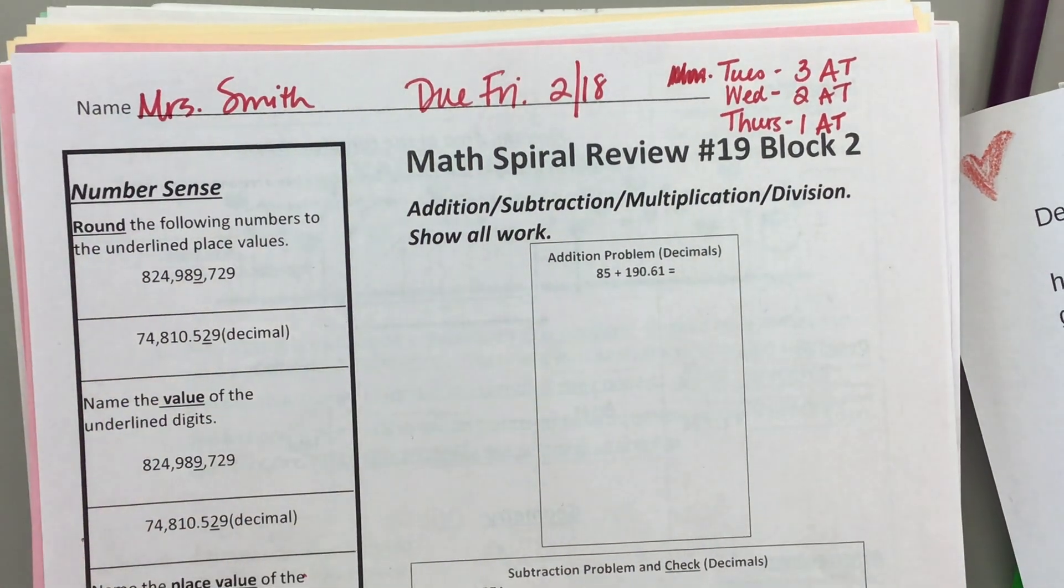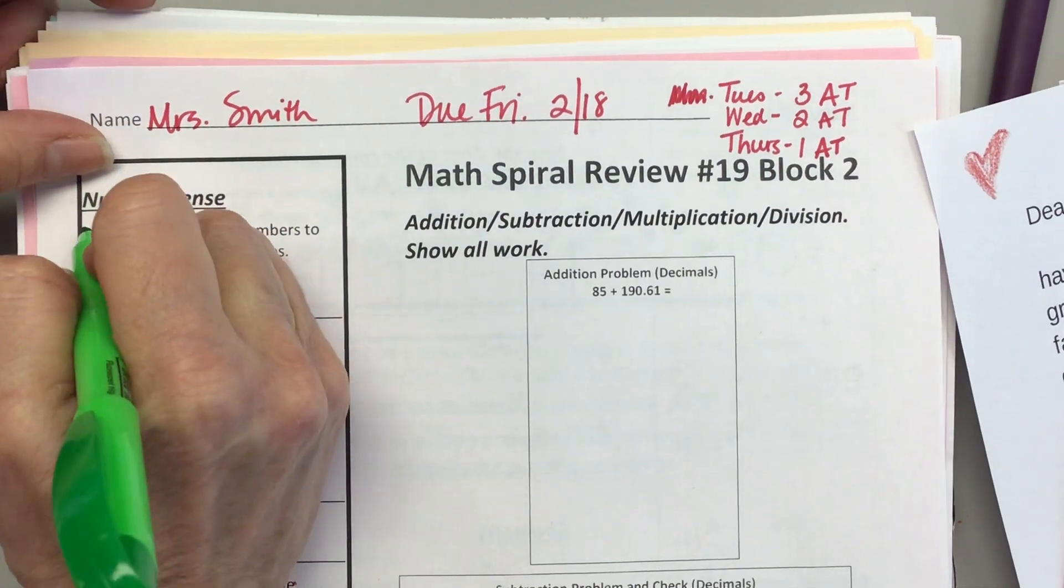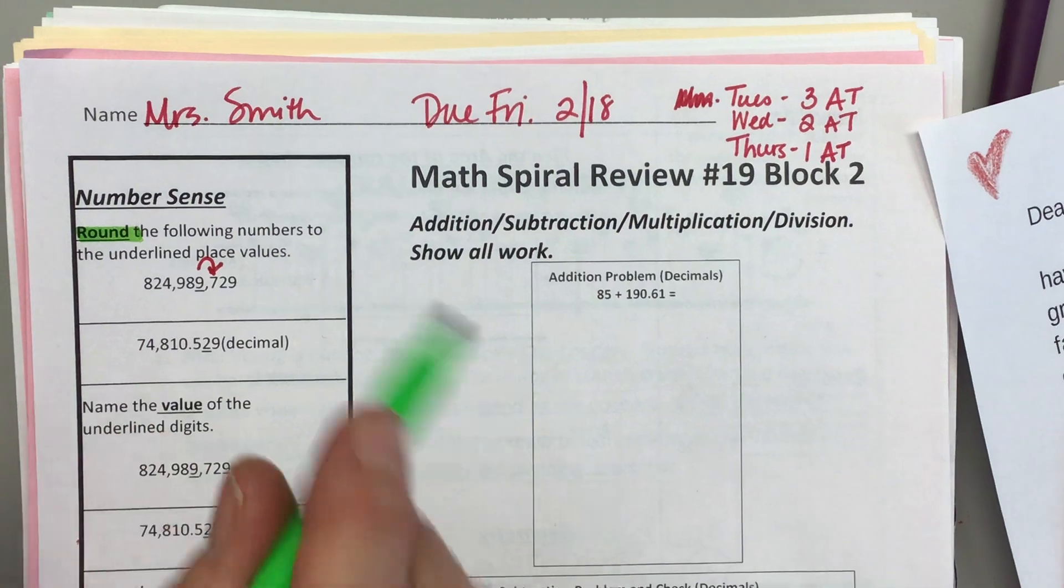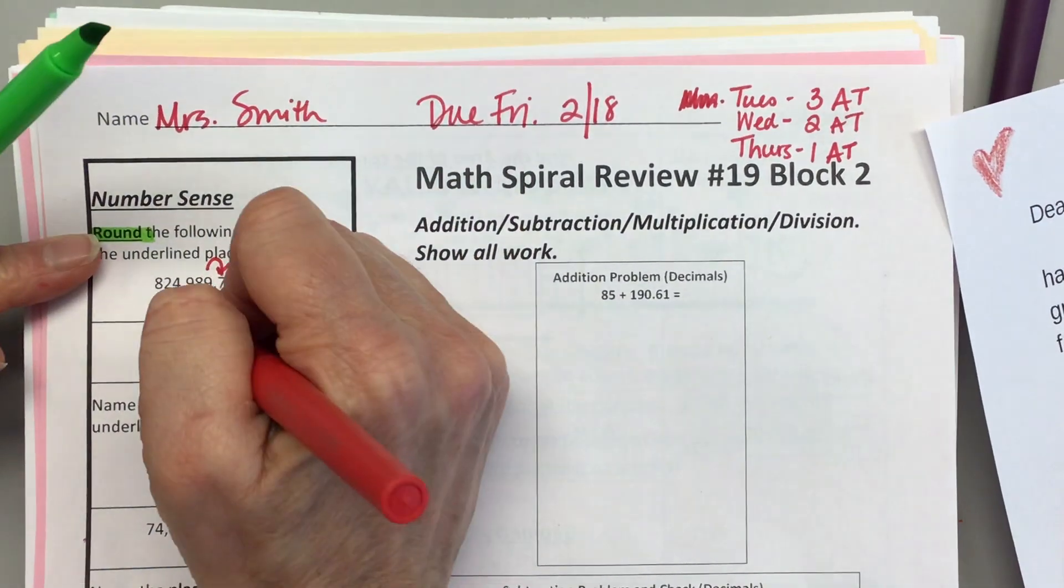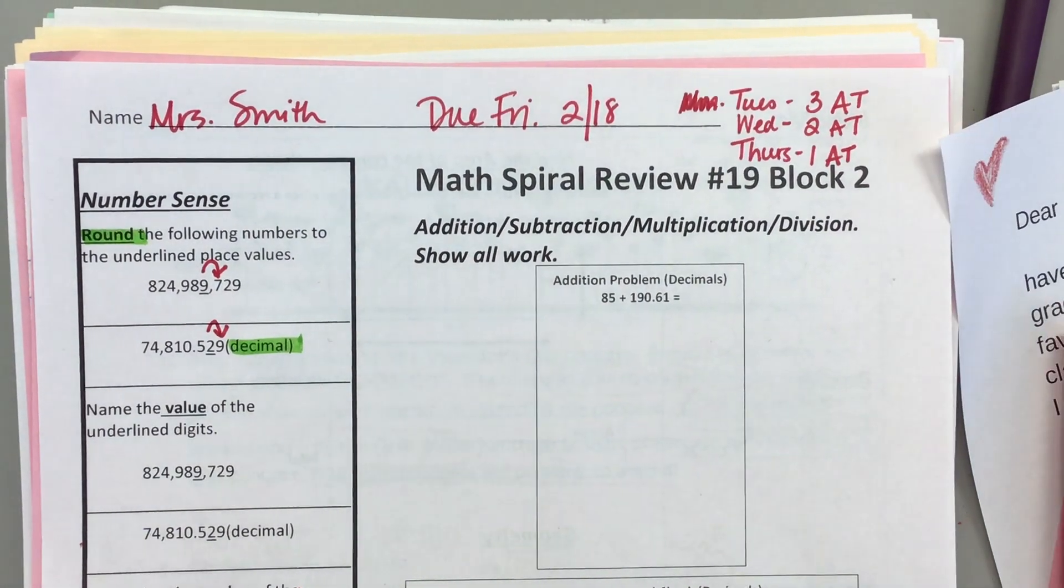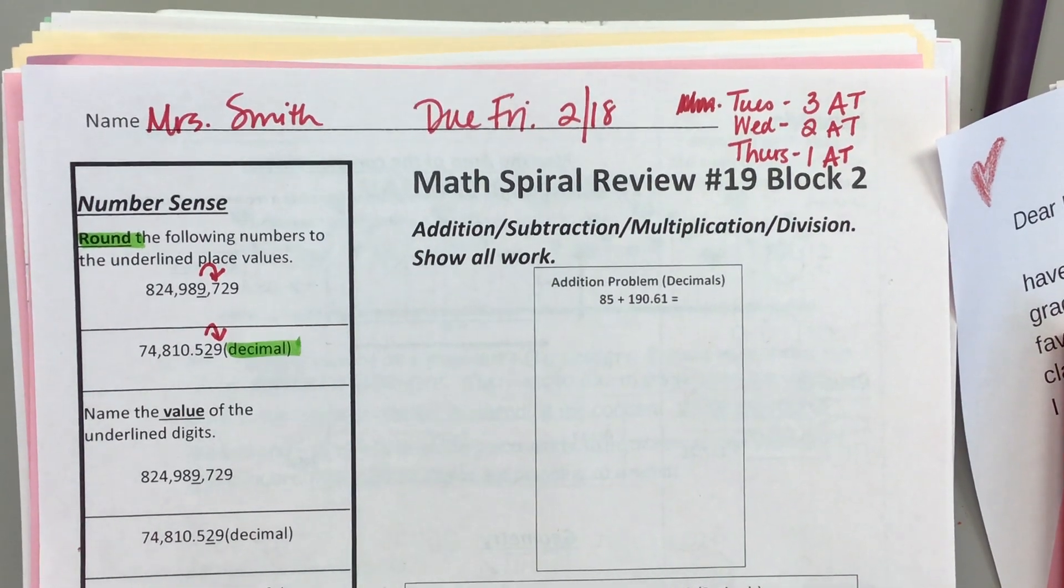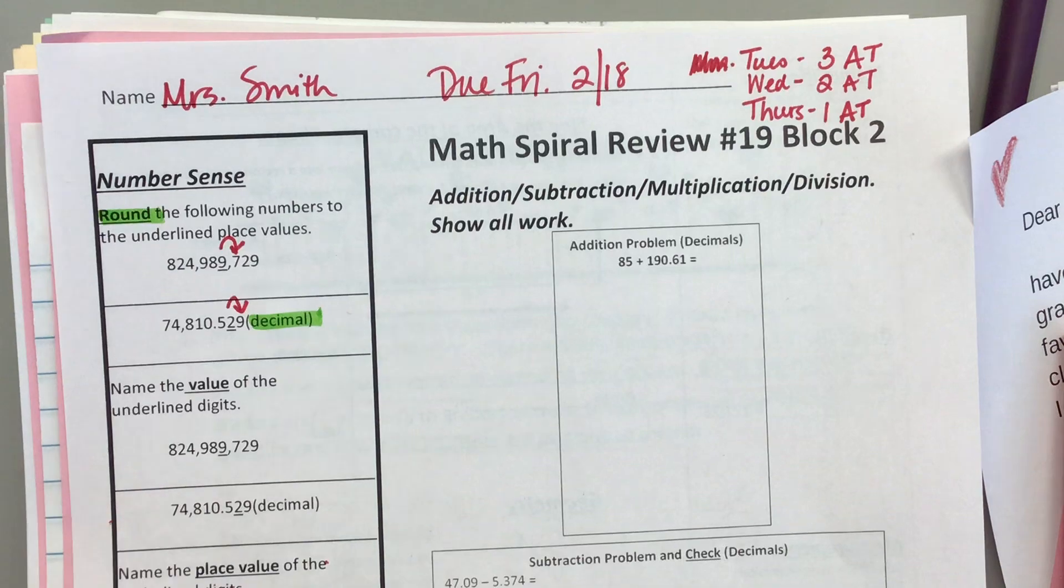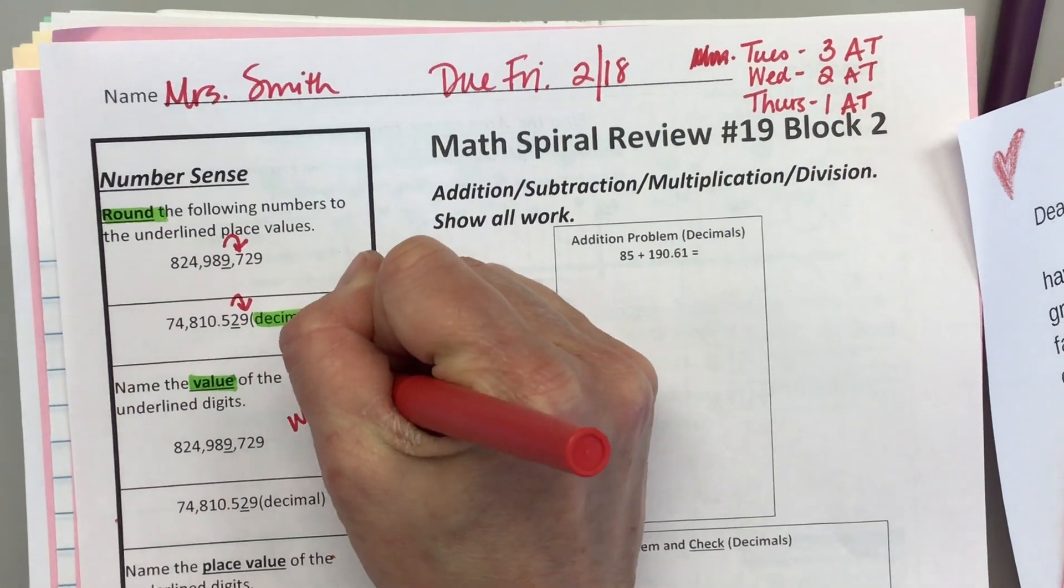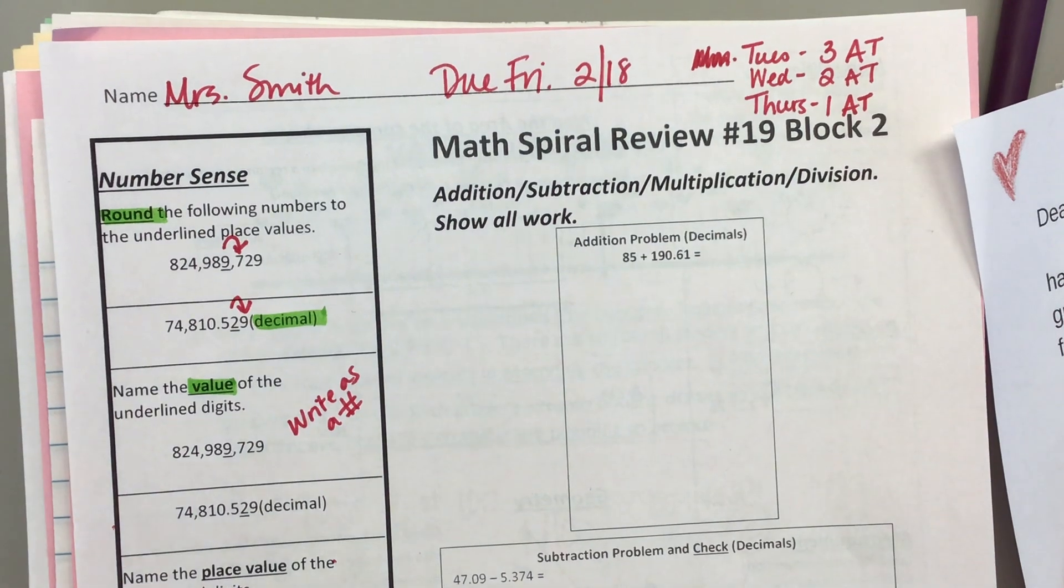Round the following numbers to the underlying place value. Highlight the word round. We're rounding it to the thousands place. Draw your arrow. This one note that it has a decimal, so it needs to be rounded to the tenths place. Draw your arrow. Remember the rule for decimals is we do not change the digits after the rounding place to zero, we just drop them.